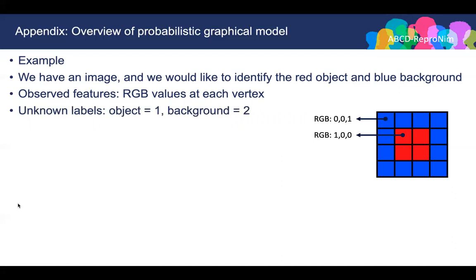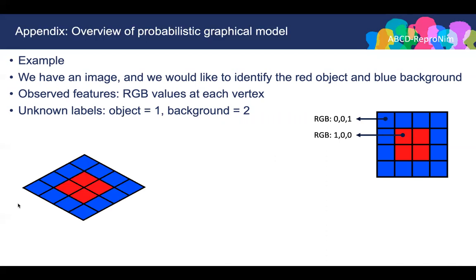The unknown labels in this example are the object, which is indicated as 1, and also the unknown label for background, which is indicated by 2. We have an observed node for this blue pixel and the unknown label of this blue pixel. Similarly, we have observed and unknown nodes for this red pixel.